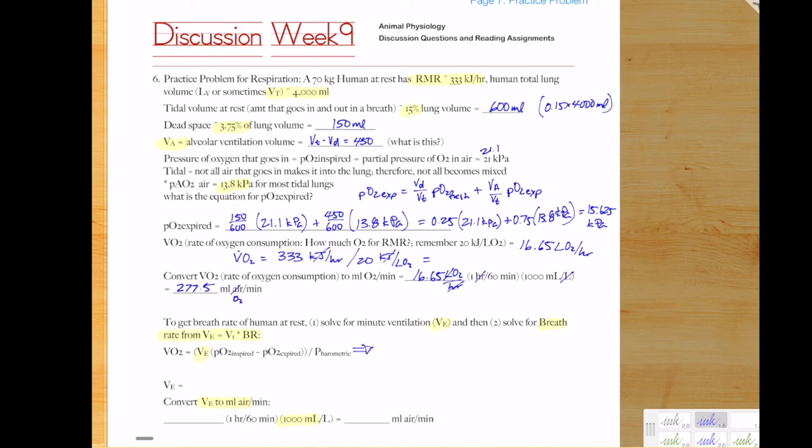So now we have VO2. We have the partial pressure of oxygen in and out as well as the total pressure. So now we are ready to solve for VE, the rate of flow or the minute respiratory volume. Taking a look at this equation, it's just the rate of oxygen consumption is determined by the rate of flow times the oxygen extraction. And here this equation saying that we get 16.65 liters of oxygen from extracting 5% of the flow. And that flow works out to be 307.1 liters of air per hour.